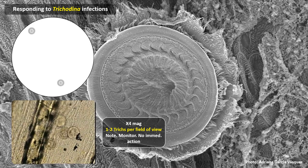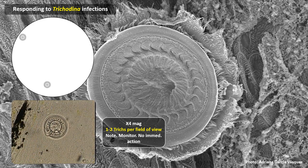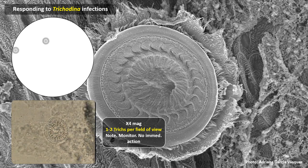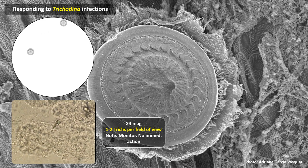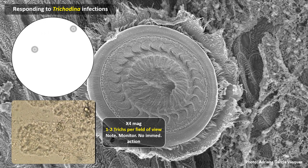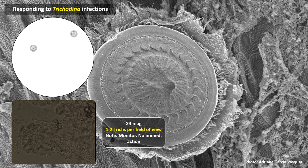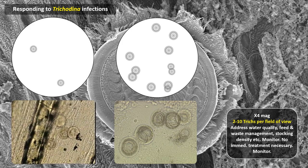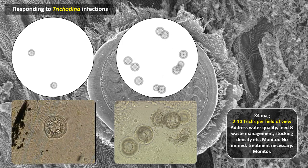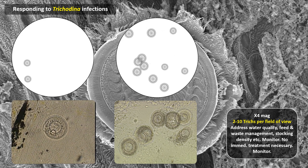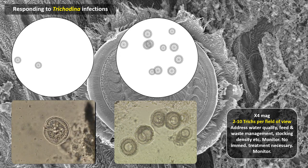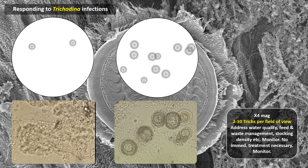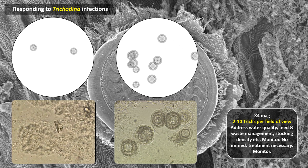I'm frequently asked about trichodina infections and what to do. If you see one or two trichodina per field of view at times four magnification, this is perhaps nothing to worry about — no immediate action is needed, but note their presence and continue to monitor numbers closely. If you start to see two to ten trichodina per times four field of view, I would advise you look at water quality, check your feed and waste management, make sure you are not overfeeding, and check or reduce stocking density. No immediate treatment may be necessary, but monitor numbers closely.